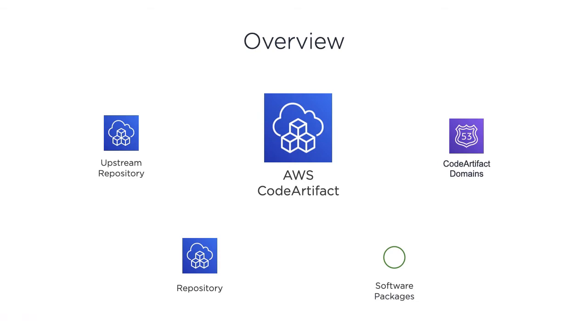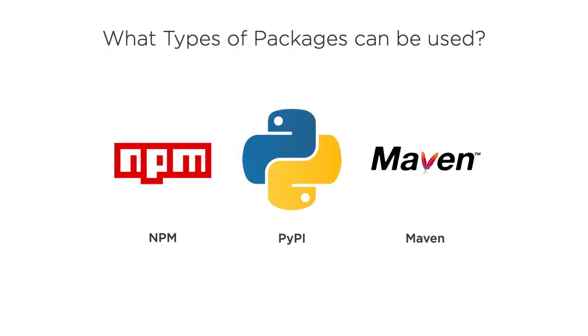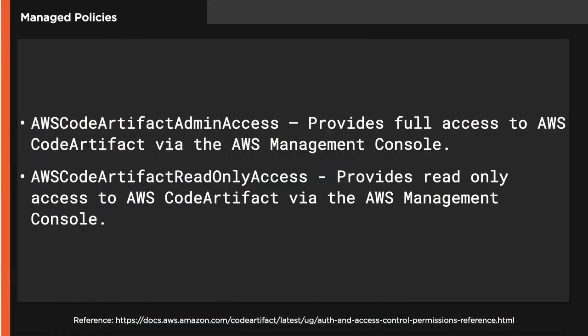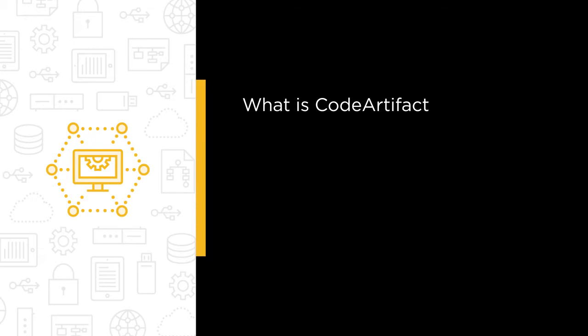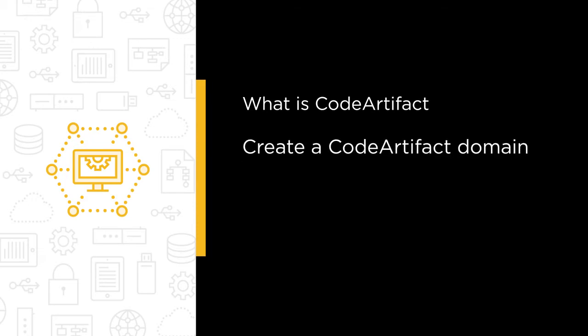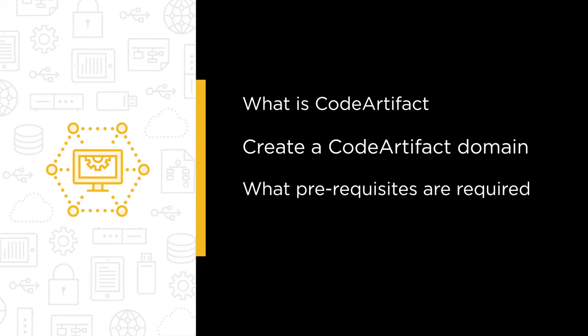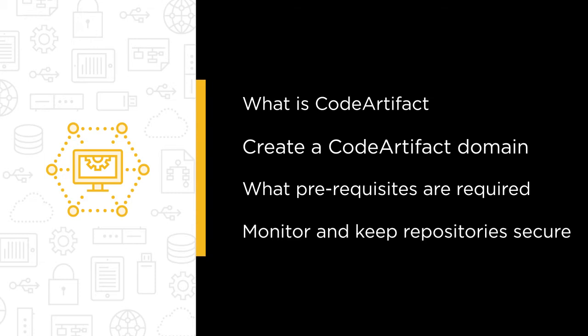This course is going to be focused on Amazon Web Services Code Artifact. Code Artifact is a super powerful software package service from AWS that allows you to store custom software packages and also public ones. This course will cover what is Code Artifact, how to create a Code Artifact domain, repository and work with software packages, the prerequisites required to make this possible, and finally how to monitor and keep your repository secure.